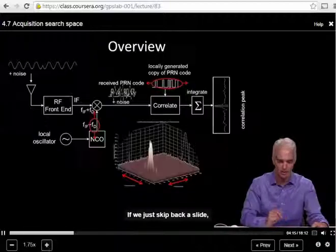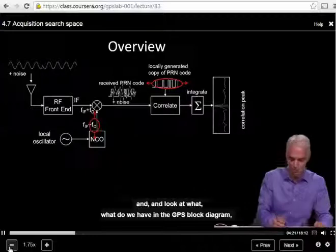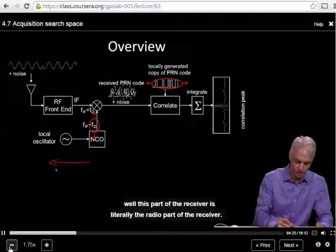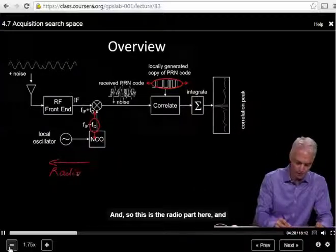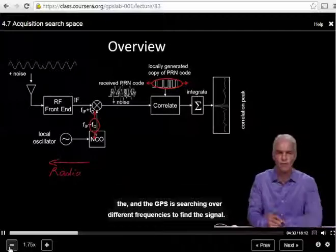If we just skip back a slide and look at what we have in the GPS block diagram, this part of the receiver is literally the radio part of the receiver. And so this is the radio part here, and the GPS is searching over different frequencies to find the signal.